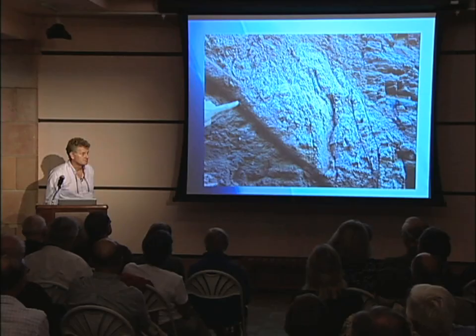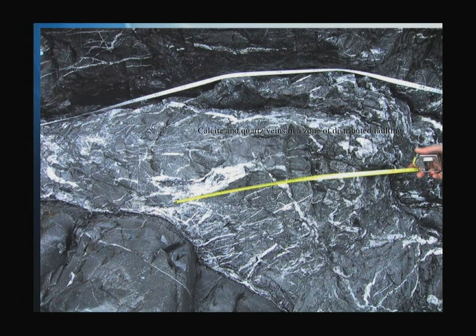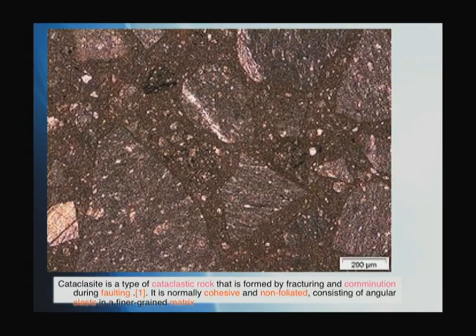Here are some striations on a fault plane — this is literally where two rocks have ground together and scraped against each other. Here are other types of faults where water has been involved and the rock is broken up into a breccia with veining. Here is a thin section — this is 0.2 of a millimeter. You're looking really down a microscope. It looks like a mess — not very pretty. They're all ground up and destroyed. This could have been a granite, but once you've been ground up over hundreds of kilometers, you don't look good. These are called cataclasites and breccias.